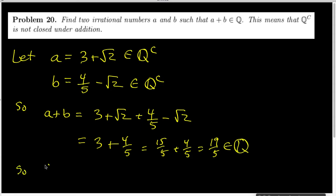So the set of irrational numbers, Q complement, under addition is not closed.